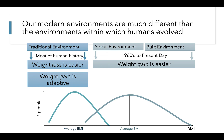Thus, weight loss was much easier than weight gain in traditional environments, and weight gain was adaptive and promoted survival. Within these traditional environments, average BMI tended to be lower. In modern environments, we have many social factors such as social events centered around food and eating, and environmental factors such as easy access to grocery and convenience stores that make it easy to eat frequently and exercise infrequently. Now, weight gain is a lot easier because we've usurped this energy balance problem that we've faced for much of human history. In our modern environment, our average BMI is relatively higher due to these drastic changes in our social and built environments.